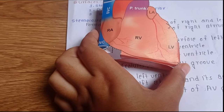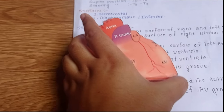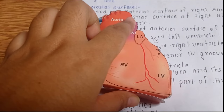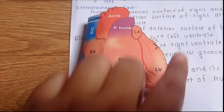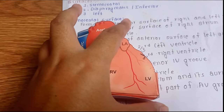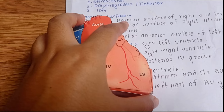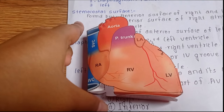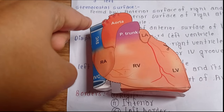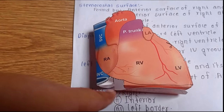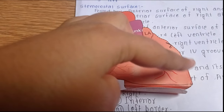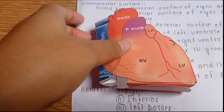The last one is the left border of the heart, which lies between the left auricle and the apex of the heart — this one I am holding is the left border of the heart. So to summarize: this one is the right border, this one is the inferior border, and this one is the left border of the heart. Thank you.